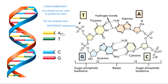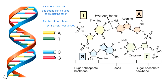C and G work the same way — every C in one strand means the other strand has a G, and every G means the other strand has a C. If you know the sequence of one strand of DNA, you can predict the other strand because they are complementary. They're not the same, but they are mirror images. Complementary — not the same, but mirror images.